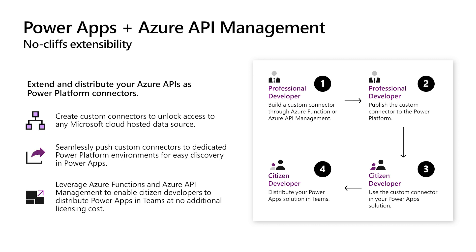I can do things like apply authentication and authorization, apply inbound policy to filter by IP address for added security, and for performance, cache responses to reduce API latency. There are a lot of benefits to putting your APIs in API Management before we even get to the Power Platform. And if we do, there's a literal one-click option to expose that API to the Power Platform for consumption by citizen developers.